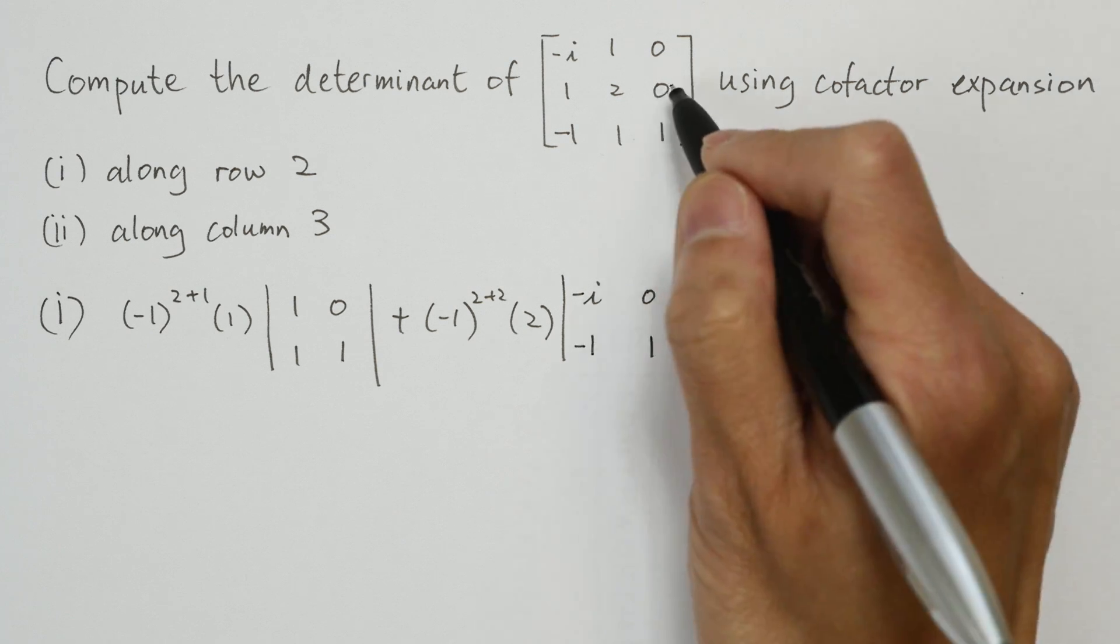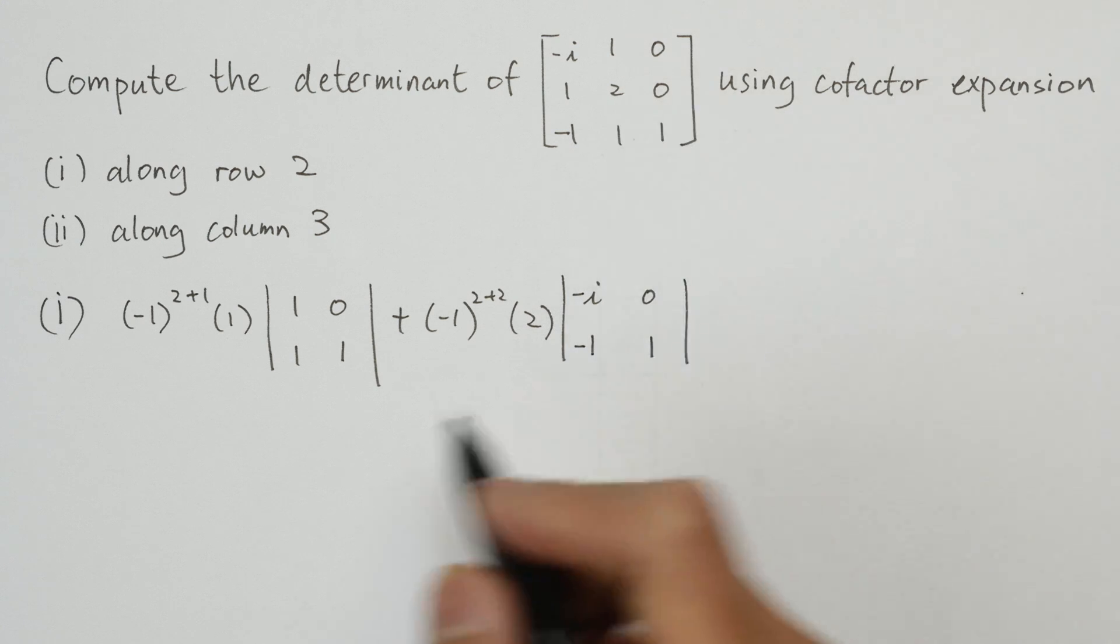And since the third element in row 2 is 0, the third term is 0, so we're not going to write anything.